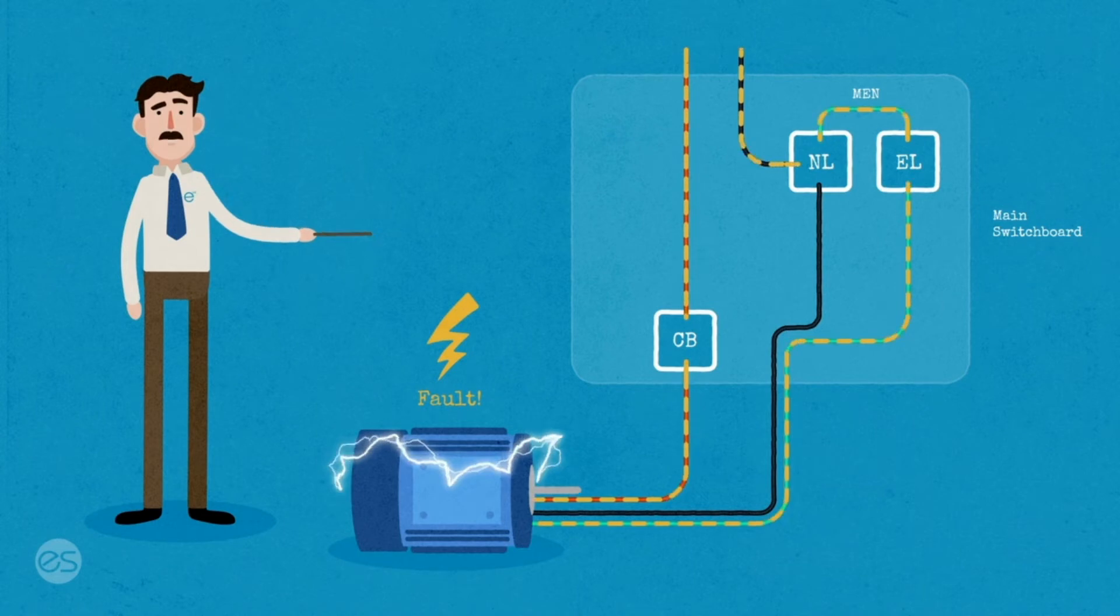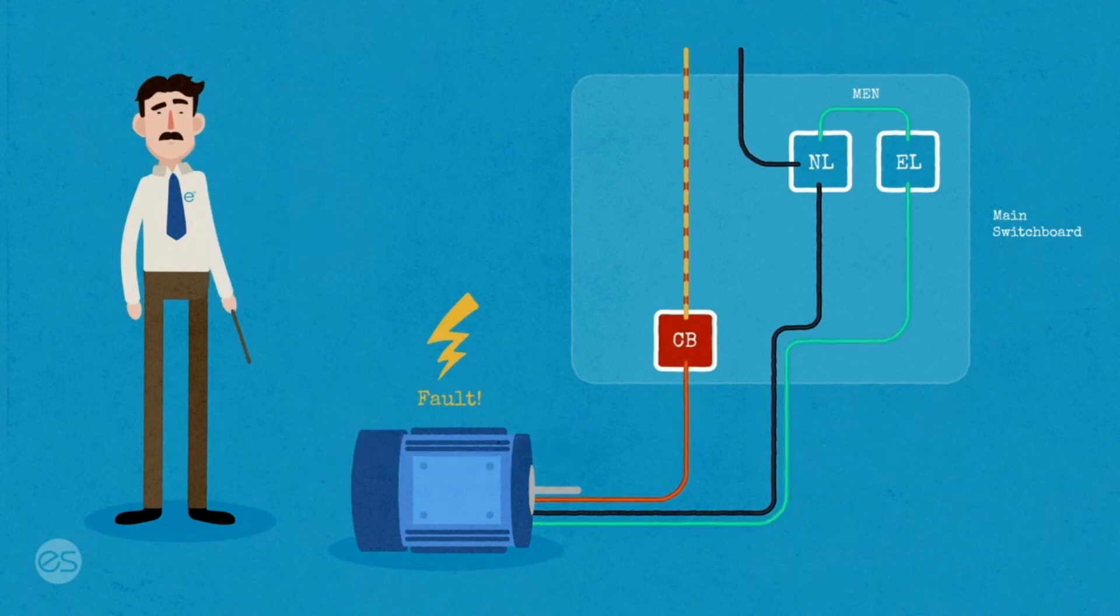If our fault loop impedance is in accordance with AS3000, our circuit breaker trips and I'm safe.